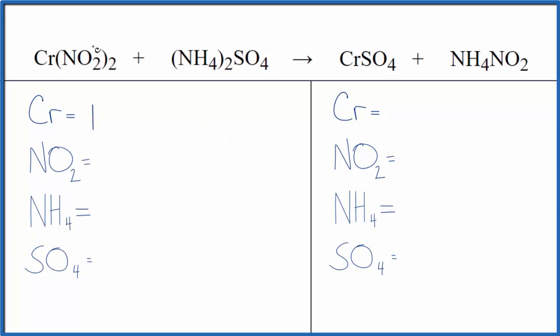So we have one chromium and then this NO₂, this is a polyatomic ion, we have it here and here. So we're going to count it as just one thing.